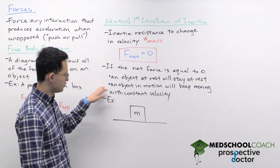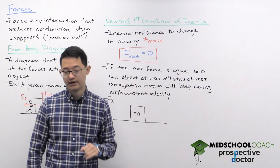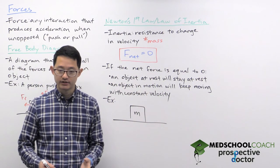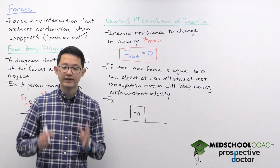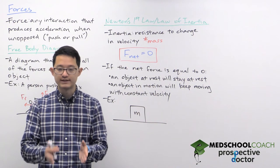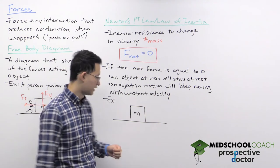And an object in motion will keep moving with constant velocity. And remember velocity is a vector, so that means the object will keep moving in the same direction and with the same magnitude of speed.